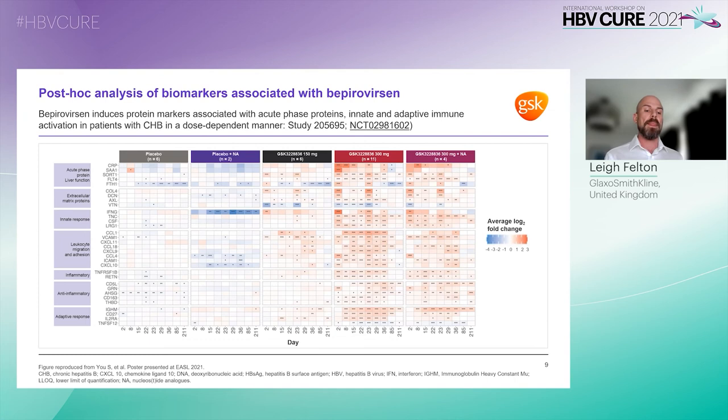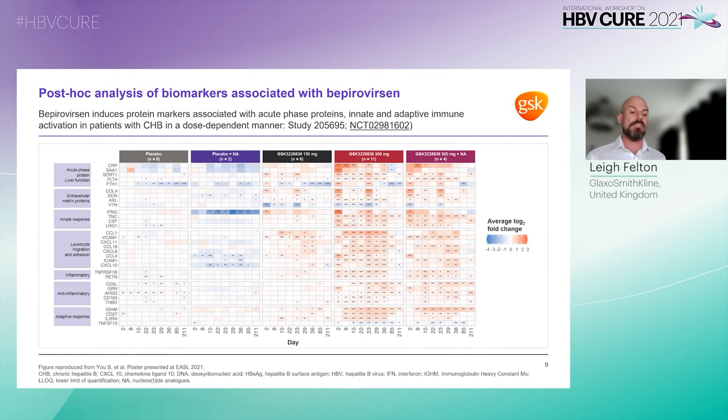Analysis of cytokine expression in longitudinal serum and plasma samples was performed for both treatment-naive and nucleoside analogue-stable patients. Acute phase proteins, extracellular matrix proteins, and interferon gamma were all upregulated within 24 hours of bepirovirsen dosing. Total IgM, shown in the table, was shown to be increased from day 8 of dosing and throughout the treatment period.